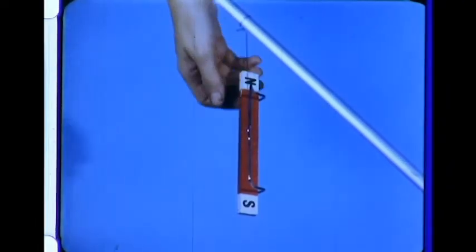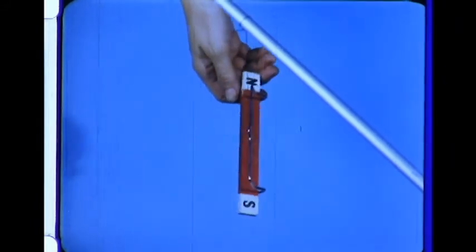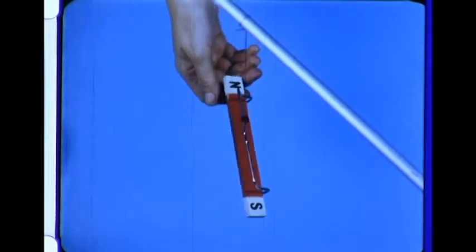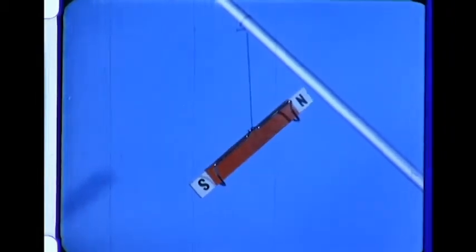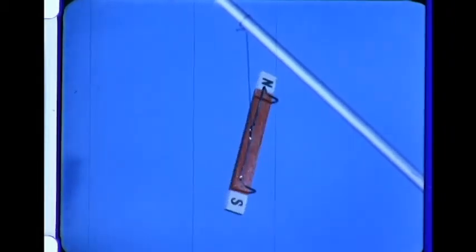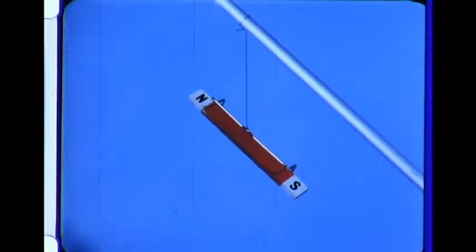The bar magnet hung from a string can turn very easily. We'll let the magnet turn freely. If we wait a few minutes, we'll find that the poles always point in the same direction.